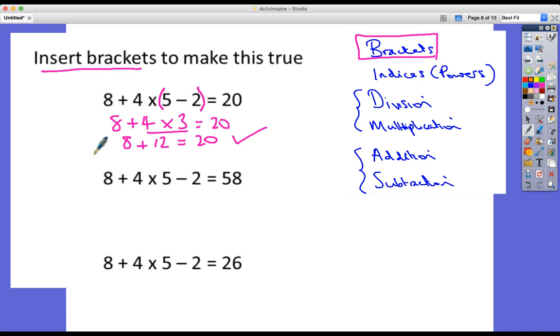I will go through the answers in a second. Have you worked out the second one? It is this, isn't it? Because if I do eight plus four, it doesn't matter that it's only got addition inside. Whatever's inside the brackets, we do it first. So we get 12 times five minus two, and then we do the multiplication. So that's 60 minus two, 58, which works.